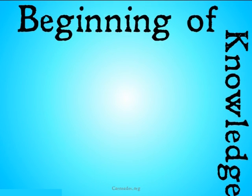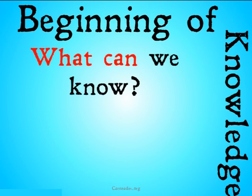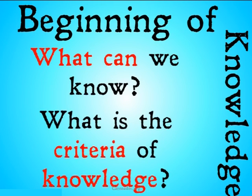Now, this is going to be a problem for the very beginning of knowledge — it's the beginning of our process of trying to find knowledge. Chisholm claims that we can either answer the question 'what can we know?' or 'what is the criteria of knowledge?', but we're unable to answer both of them.